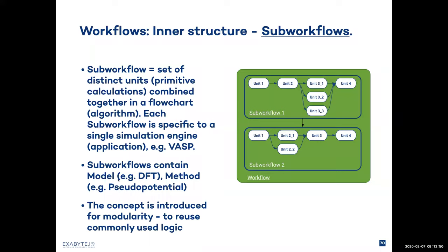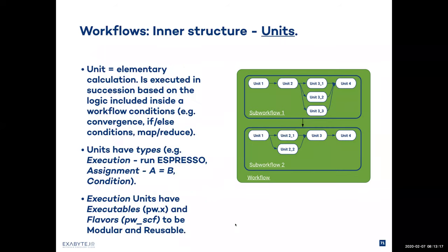The second option when dealing with workflows is to edit the logic included inside. To understand this, we need to understand the inner structure of the workflow. Workflows consist of sub-workflows and units — two building blocks. A sub-workflow is a set of distinct units, primitive calculations, combined together in a flowchart or algorithm. Each sub-workflow is specific to a single simulation engine or application — for example, VASP or Quantum Espresso. Sub-workflows contain models like density functional theory and methods like pseudopotential. Sub-workflows can contain, for example, a Quantum Espresso self-consistent run, and then another sub-workflow would be post-processing executed using Python.